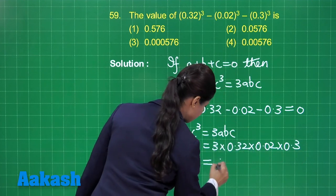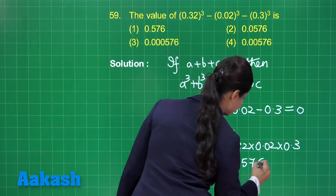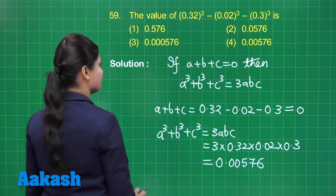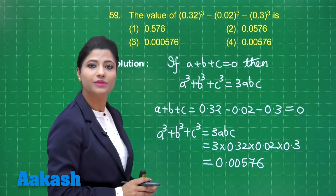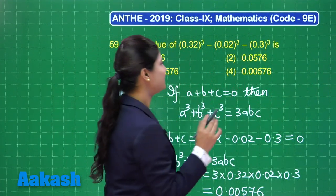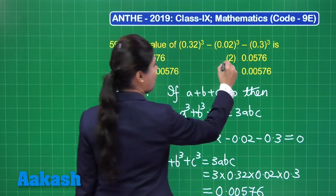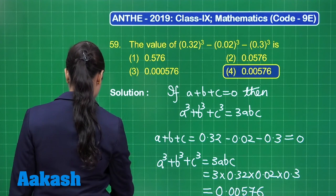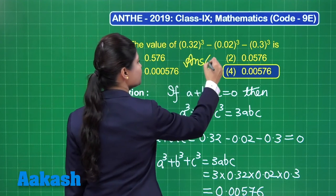The value equals 3 times 0.32 into 0.02 into 0.3. The product gives 0.00576, which is the required answer. Out of the four options, the correct answer is option number 4.